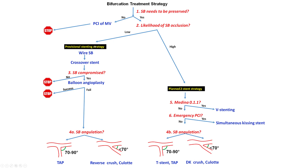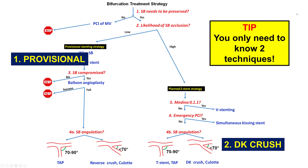Provisional stenting is one of the two main bifurcation strategies. Provisional and DK crush are the two main strategies one needs to know to be able to do the vast majority of coronary bifurcations. The main determinant about using provisional — which means stenting across the side branch — versus doing a planned two-stent strategy — which means putting a stent in both the side branch and the main vessel — has to do with the likelihood of losing the side branch and the consequences of losing it.